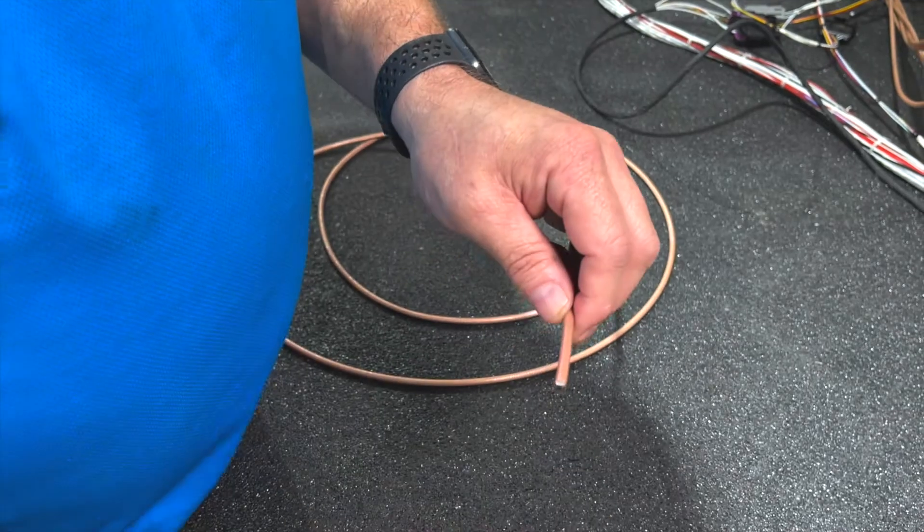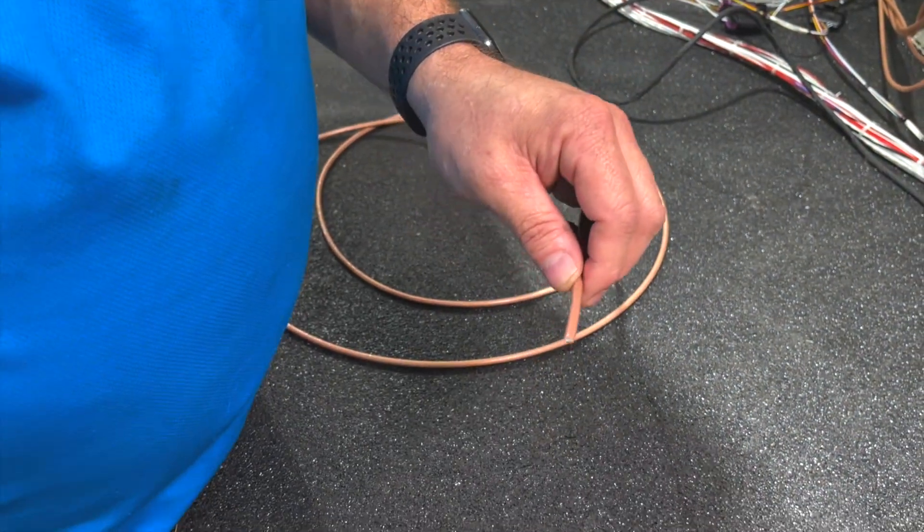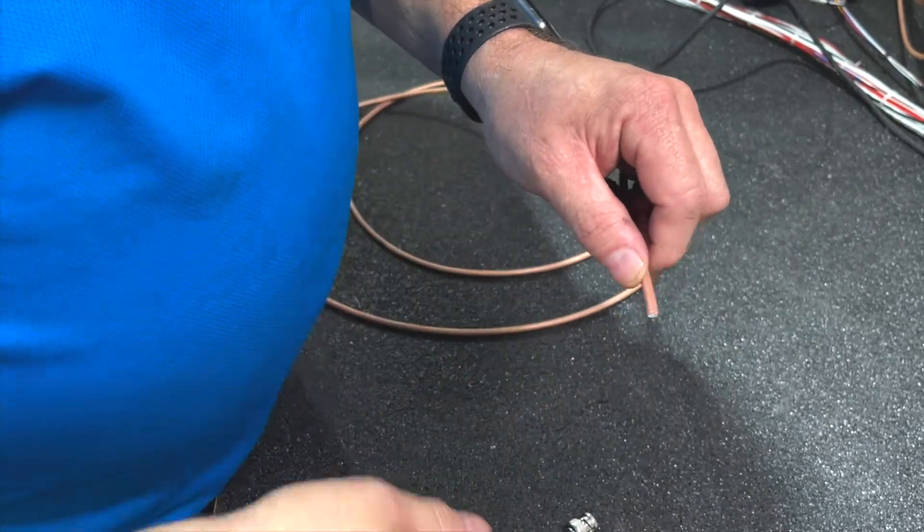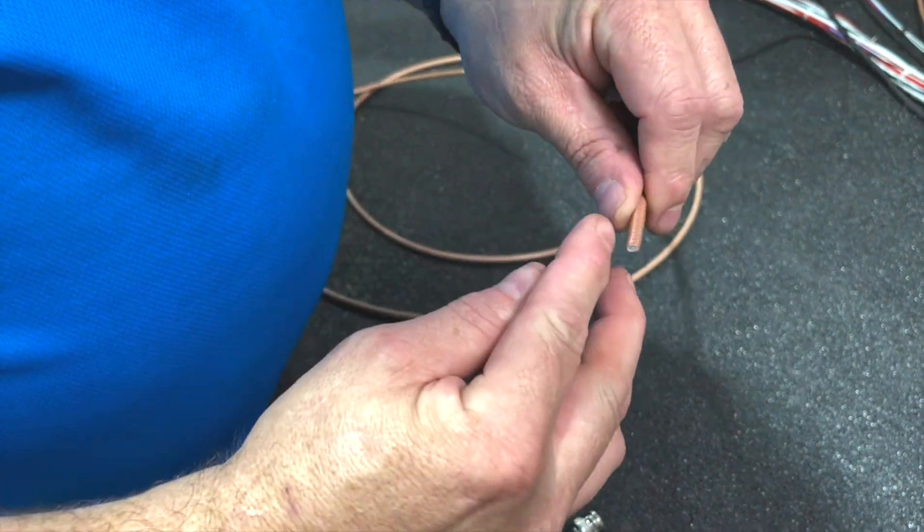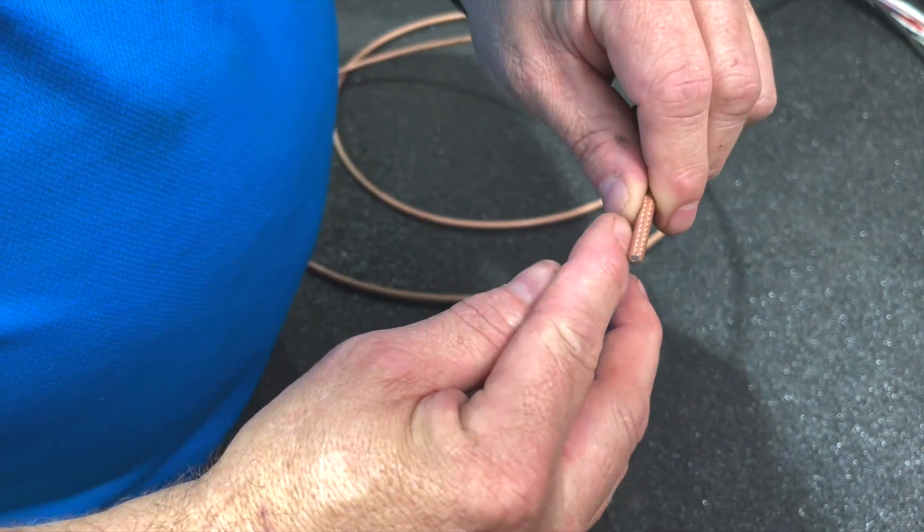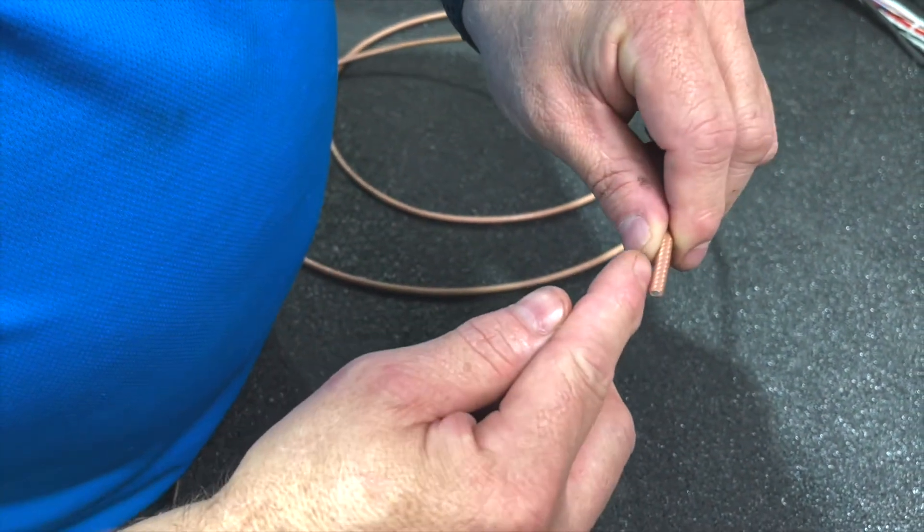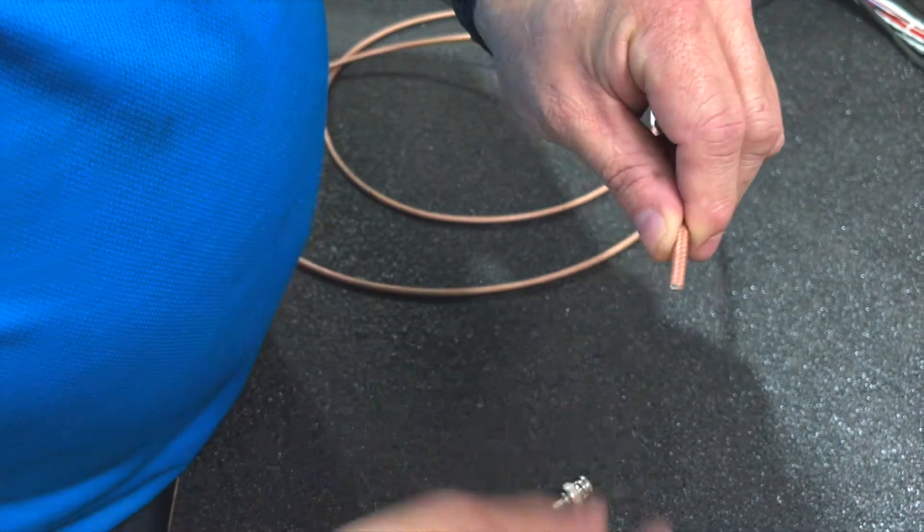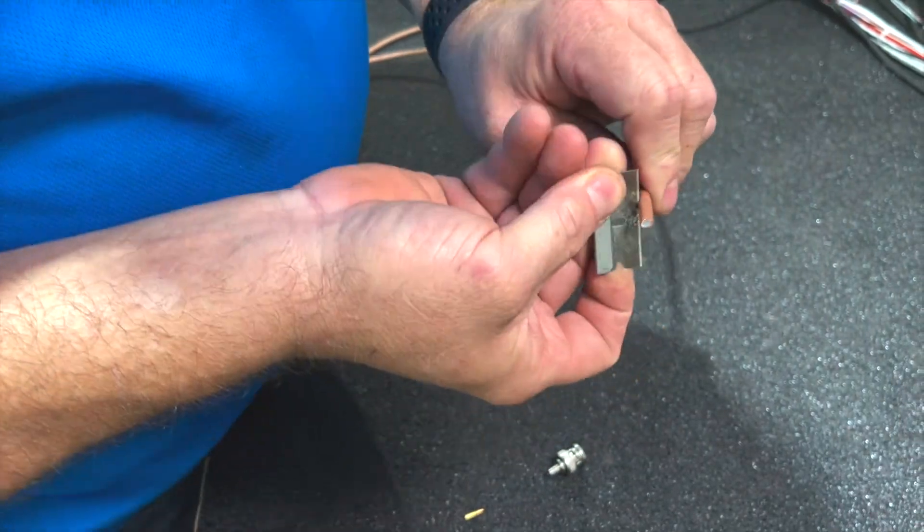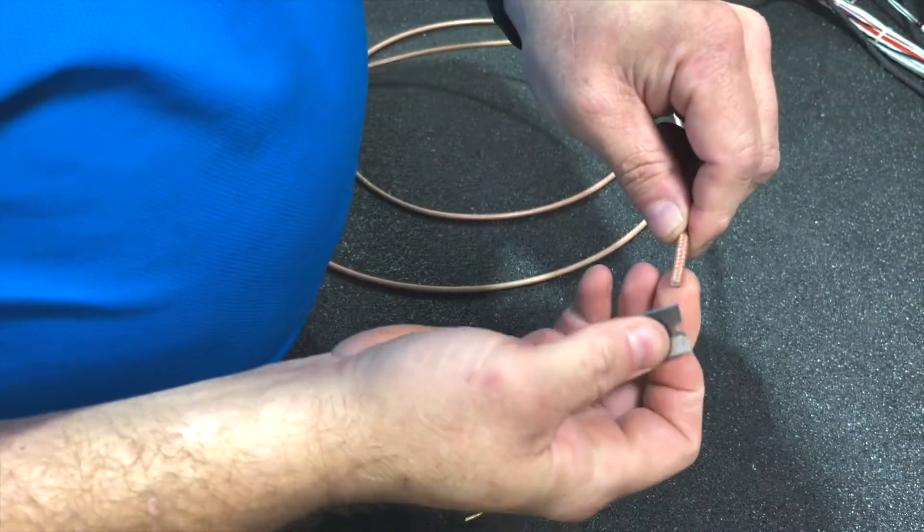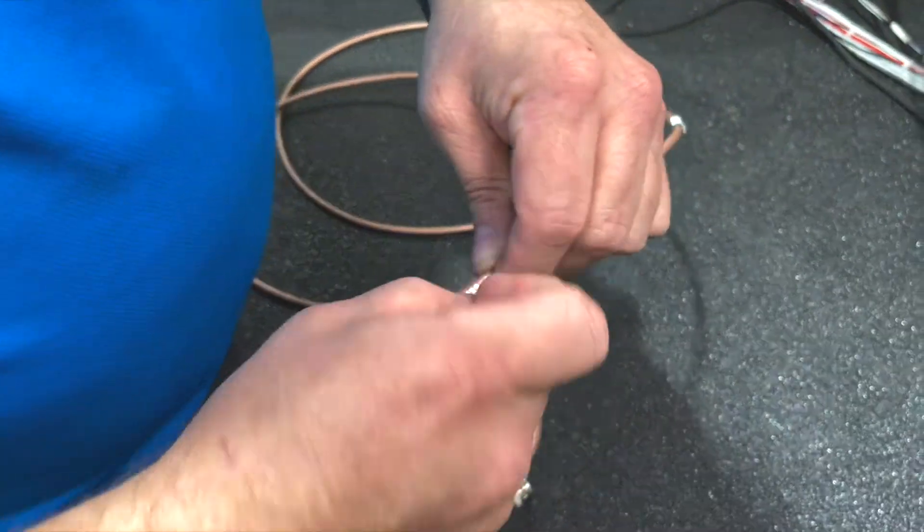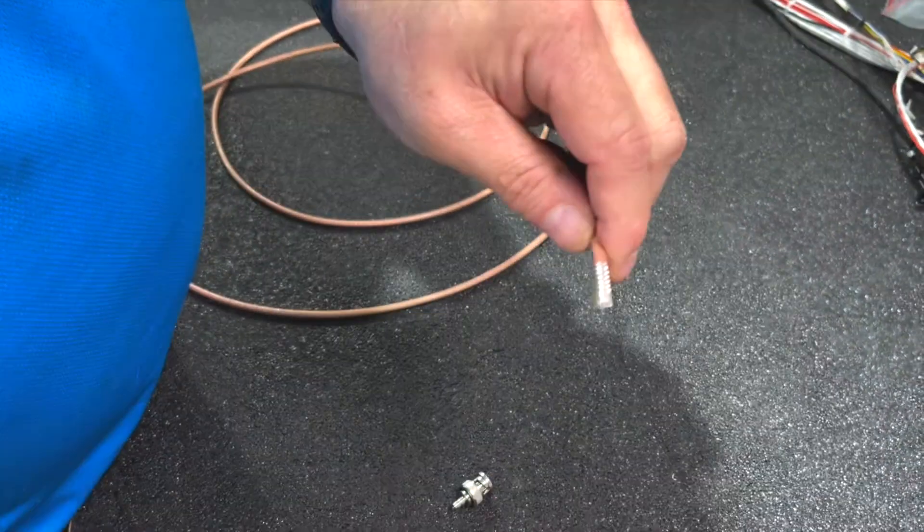All we use is a blade, snips, and a crimper. We just do them all by hand. So we need to strip this back about a half of an inch. I start by putting it to the tip of my nail here, then to my thumb, and that gives me a good reference on where to score this outer jacket. So we'll go ahead and score the outer jacket. Don't go too deep, then we make a slit down the center of it, and then that allows us to peel that jacket right off.